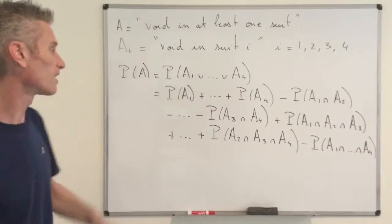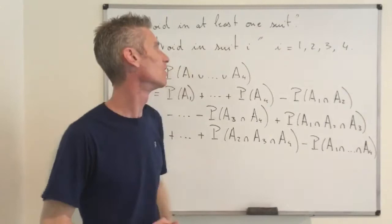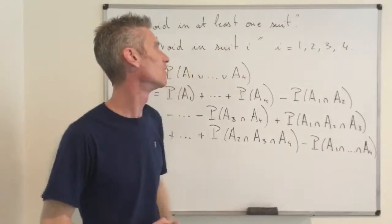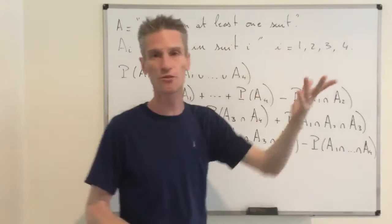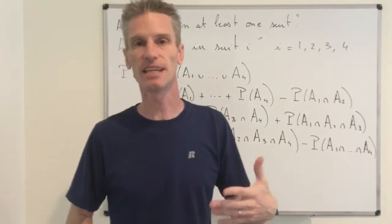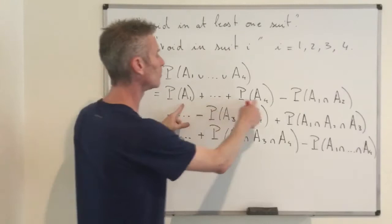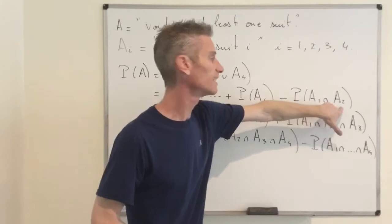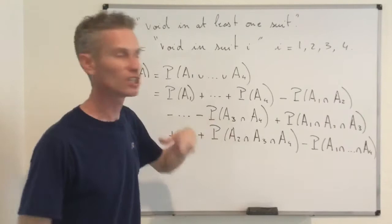It looks like a lot to compute, but it's not difficult because of perfect symmetry. The problem doesn't change if you exchange the suits, so being void in suit 1 has the same probability as being void in suit 2, and similarly all pairwise intersections have the same probability. So using symmetry, we only need to compute a few distinct probabilities and count how many times each appears.